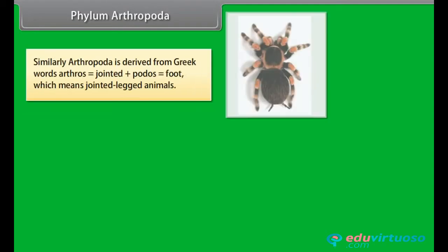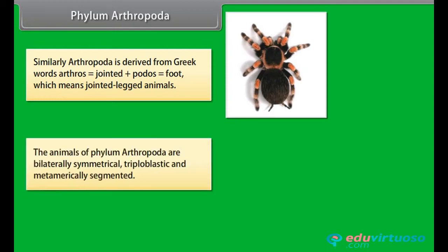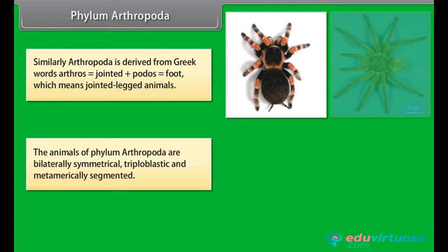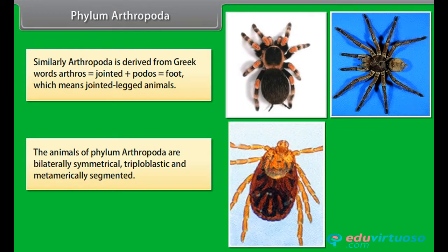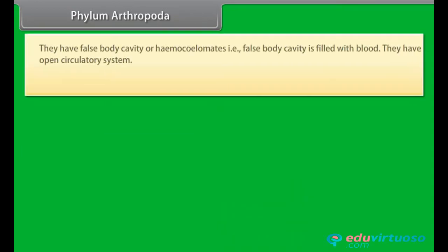Arthropoda is derived from Greek words arthros, meaning jointed, plus podos, meaning foot — jointed-legged animals. The animals of phylum Arthropoda are bilaterally symmetrical, triploblastic, and metamerically segmented. They have a false body cavity, or haemocoel, that is, false body cavities filled with blood.